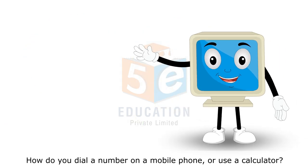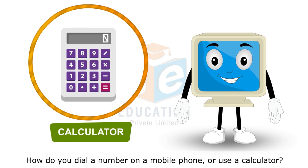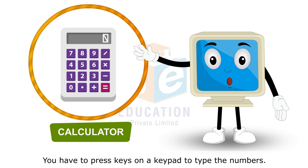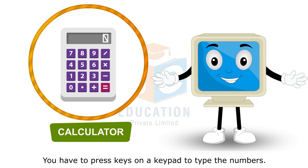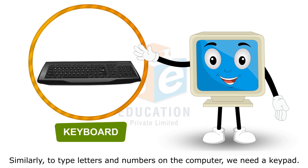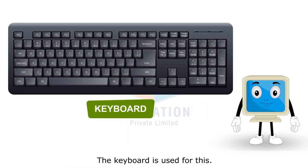How do you dial a number on a mobile phone or use a calculator? You have to press keys on a keypad to type the numbers. Similarly, to type letters and numbers on the computer, we need a keypad. The keyboard is used for this.